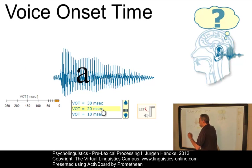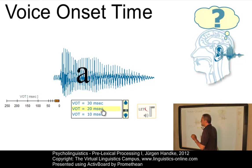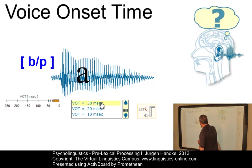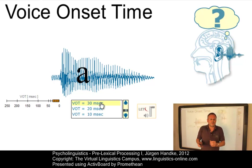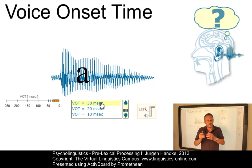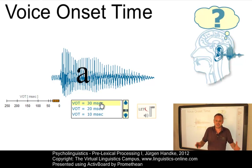Quite interestingly, if we generate a VOT value of 30 milliseconds, then we have trouble identifying what we hear. In other words, if VOT is longer than 30 milliseconds we hear BA; if it is shorter, the perceptual result is PA. So the voice onset time value of 30 milliseconds serves as a key factor — a sort of acoustic cue — marking the categorical boundary.